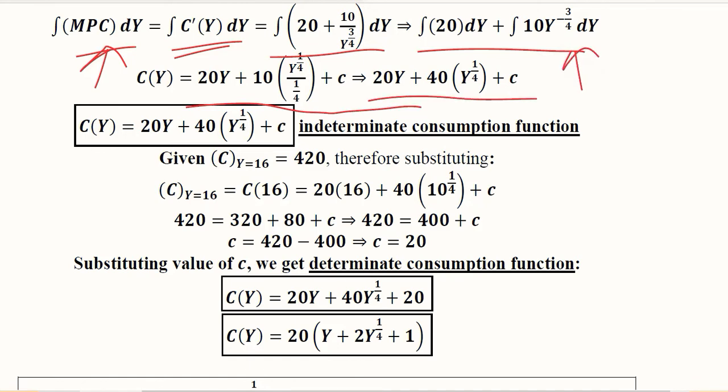Once we apply this, we get the indeterminate function because the arbitrary constant c is still present. On the left-hand side, consumption is a function of income. This expression explains the relationship between the two variables.